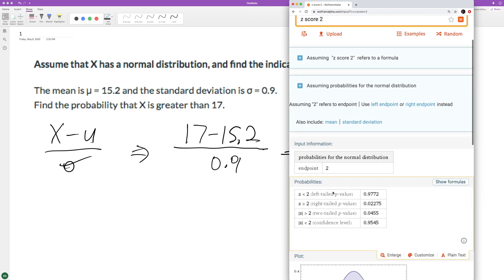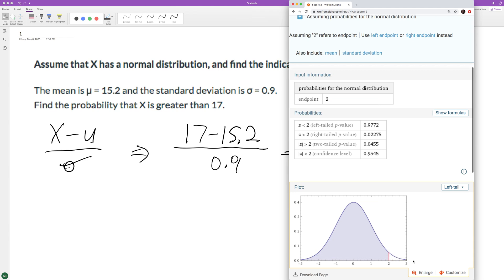So left tail, but we want to know greater than, so it's going to be right tail. It's going to be right of that. So it's going to be, it looks like 0.02.